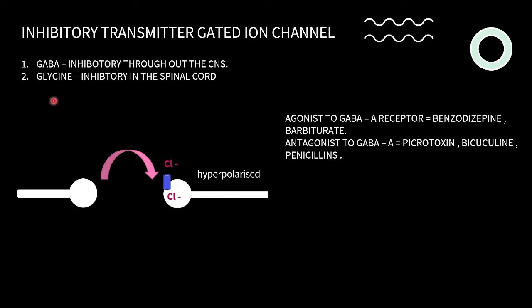Next, we have glycine. The action of glycine and GABA is similar — glycine also acts on chloride ion channels, allowing chloride to enter the cell and inhibit it. The only difference is that GABA works throughout the CNS whereas glycine works as an inhibitory neurotransmitter only in the spinal cord.